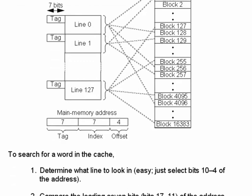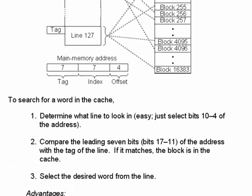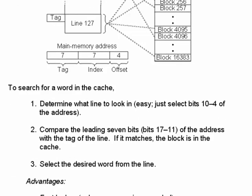It's easy in a direct mapped cache to search for a word. All you do is determine which line to look in using the middle 7 bits of the address (the index field), and compare the leading 7 bits (the tag field) with the tag stored in that line. If they match, it's a hit and you select the desired word from that line. If they don't match, it's a miss.